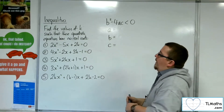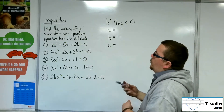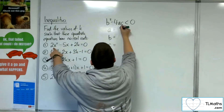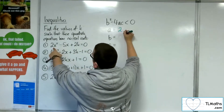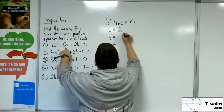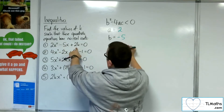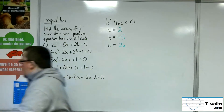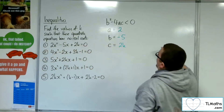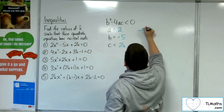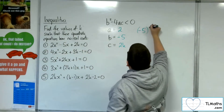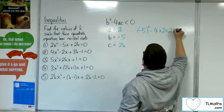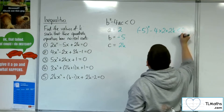Let's have a look at number one: 2x squared take away 5x plus 2k equals zero. So A will be 2, B will be minus 5, and C will be 2k. So we want B squared — so minus 5 squared — take away 4 lots of A times C, and that's got to be negative.